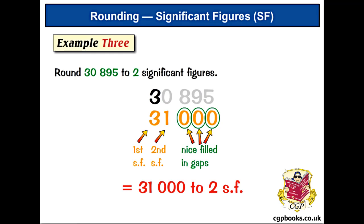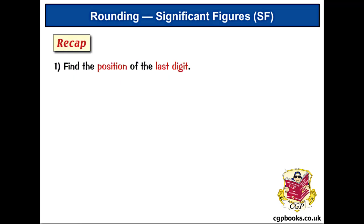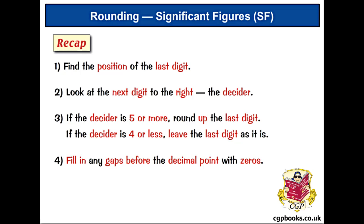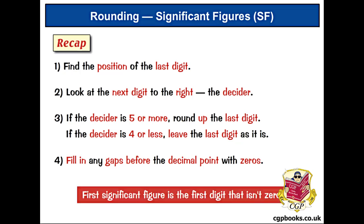Let's quickly run through the rounding method one last time. First, find the position of the last digit. Then look at the next digit to the right — the decider. If the decider is five or more, round up the last digit. But if it's four or less, leave the last digit as it is. Then, if you need to, fill in any gaps before the decimal point with zeros. And remember, the first significant figure is the first digit that isn't zero. Thanks for staying with me through all that — go and have a well-deserved cuppa.